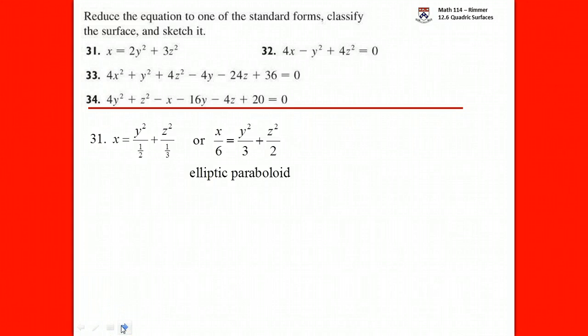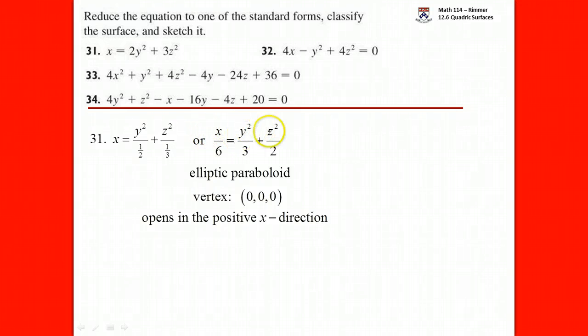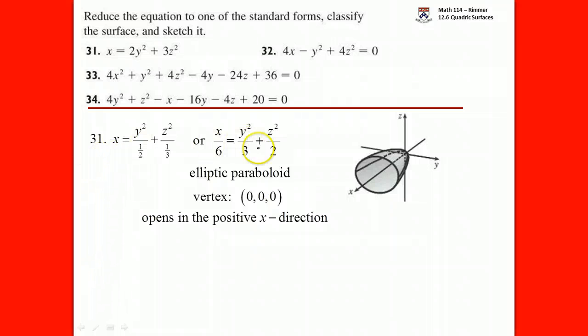If you had to graph it, the vertex is at the origin and the elliptic paraboloid is a bowl opening in the positive x direction. For it to open in the negative x direction, you would make both squared terms negative, or multiply the whole equation by negative one. That flips the bowl to open in negative x. Identifying the name is the key skill — going from equation to shape name.